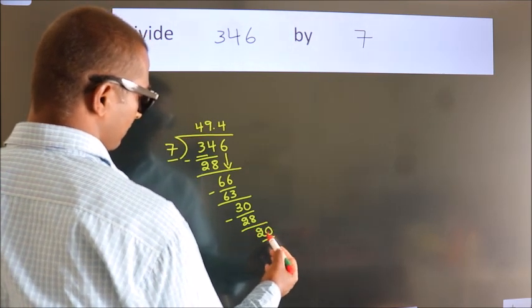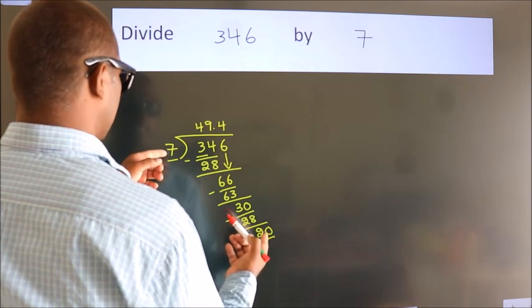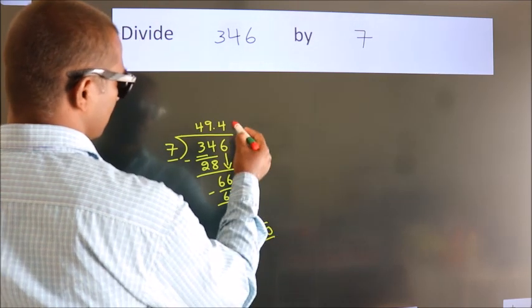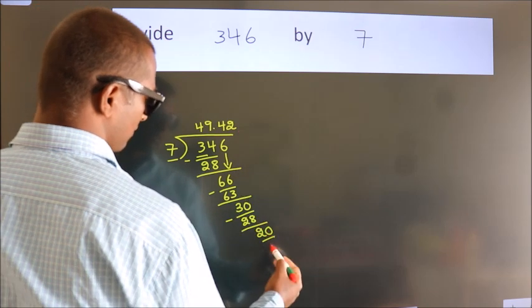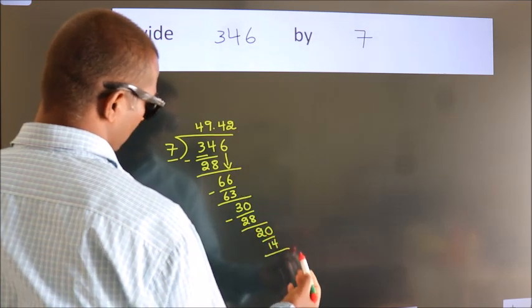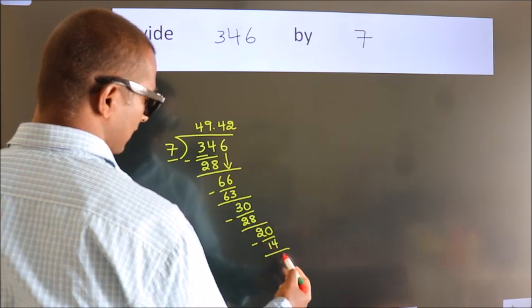So, 20. A number close to 20 in 7 table is 7 twos, 14. Now, we subtract. We get 6.